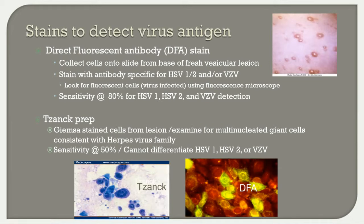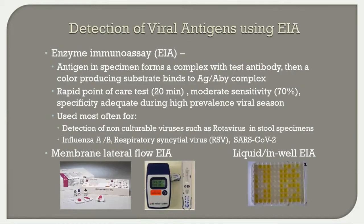Before fluorescent antibody staining, we used Tzanck preps. You do the same cell collection at the base of the lesion and stain with Giemsa stain, examining for multi-nucleated giant cells consistent with the herpes virus family. The sensitivity is lower than DFA, around 50 percent, and you cannot differentiate HSV 1, 2, and VZV.